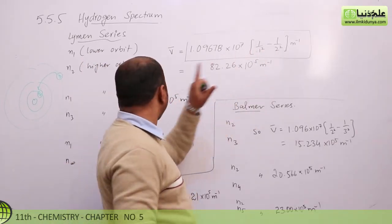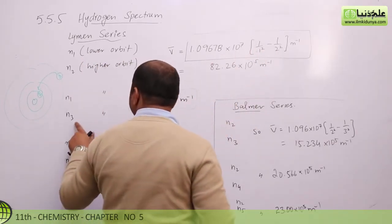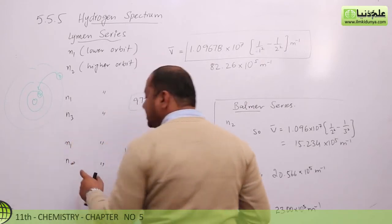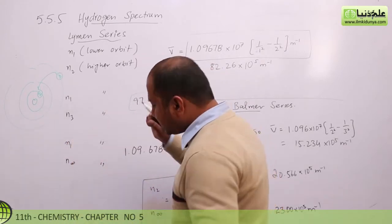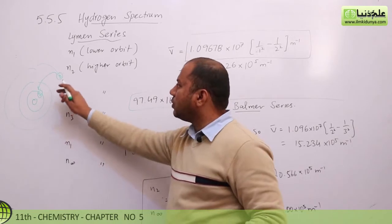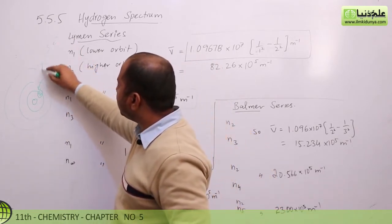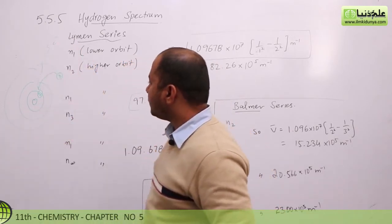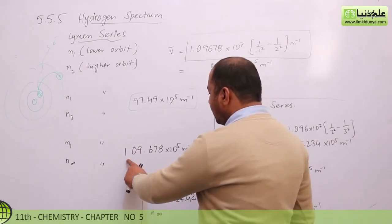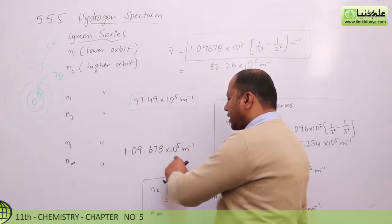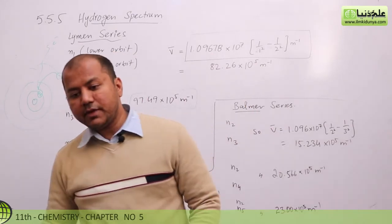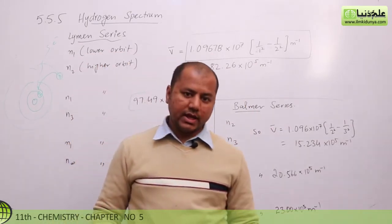From the 3rd shell coming to the 1st shell. And if from infinity, if you bring the electron from infinity — let's say you take the electron and bring it into the 1st shell — then 1.0678 into 10 to the power 5, per meter, is the wave number you get.